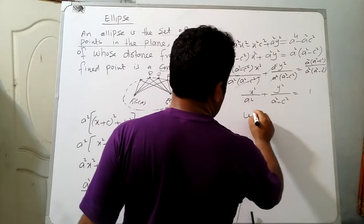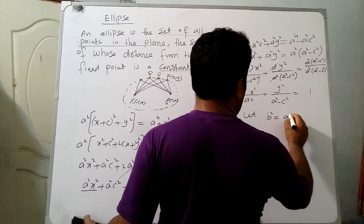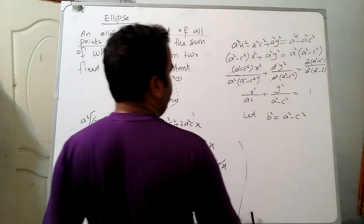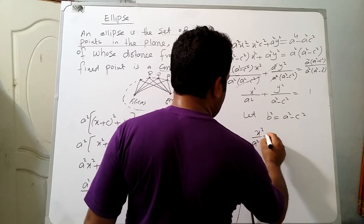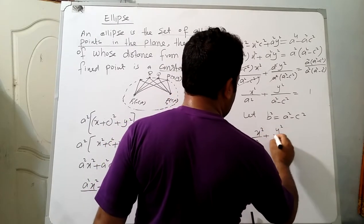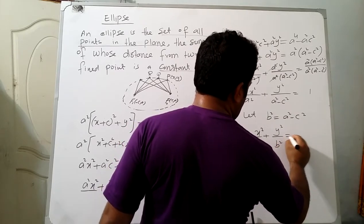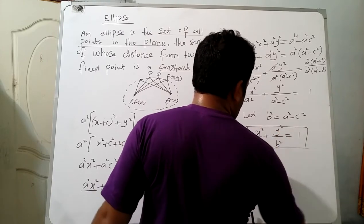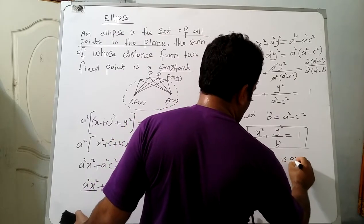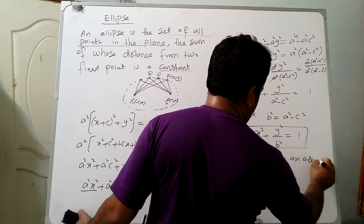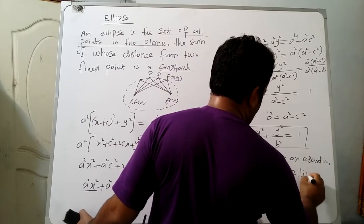Let b² = a² - c². Then the equation becomes x²/a² + y²/b² = 1, which is the standard equation of an ellipse. The x-axis is called the axis of the ellipse, and the origin is the center of the ellipse.